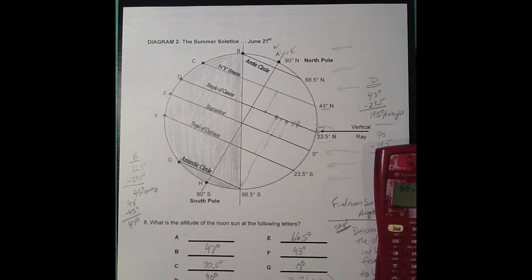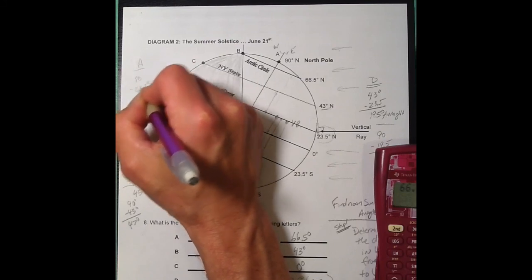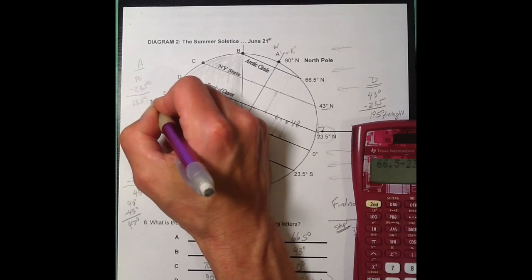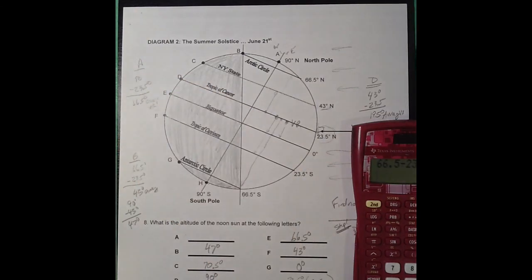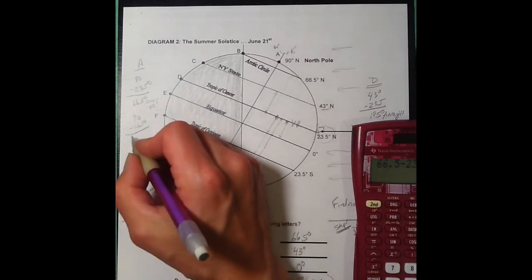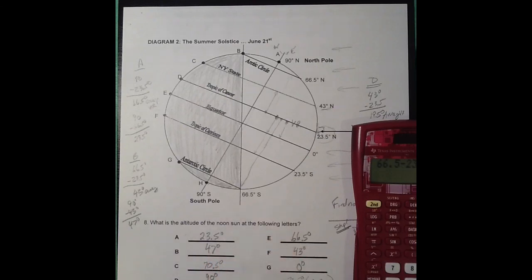The last one is the North Pole. You're getting 24 hours of continuous daylight, but it does not mean it's warm — low angles of the sun's rays do not give you much intensity. For point A, I do 90 minus 23.5 degrees: you're on the same side, so that's 66.5 degrees away from the vertical ray. Then 90 minus 66.5 gives 23.5 degrees. At the North Pole, you get 24 hours of continuous daylight and the sun is 23.5 degrees above the horizon. That's diagram two, the summer solstice.